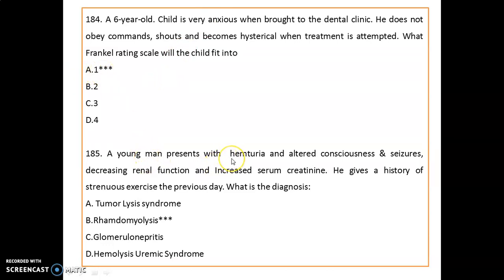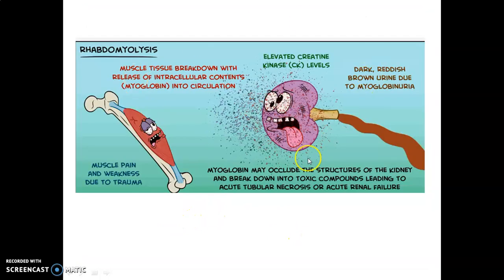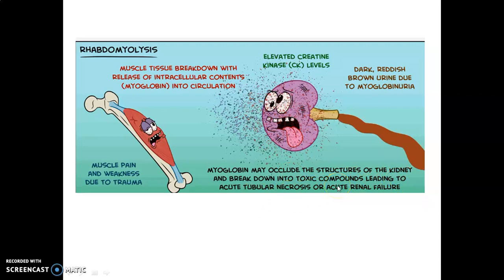A young man presents with hematuria, altered consciousness, seizures, decreased renal function, and increased serum creatinine. He gives a history of strenuous exercise the previous day. The diagnosis is rhabdomyolysis. In rhabdomyolysis, muscle tissue breaks down with release of intracellular contents — myoglobin — into circulation. Myoglobin may occlude kidney structures and break down into toxic components, leading to acute tubular necrosis or acute renal failure, and dark reddish-brown urine due to myoglobinuria.